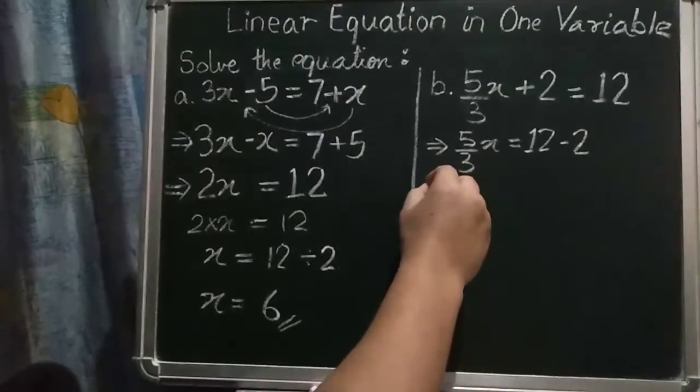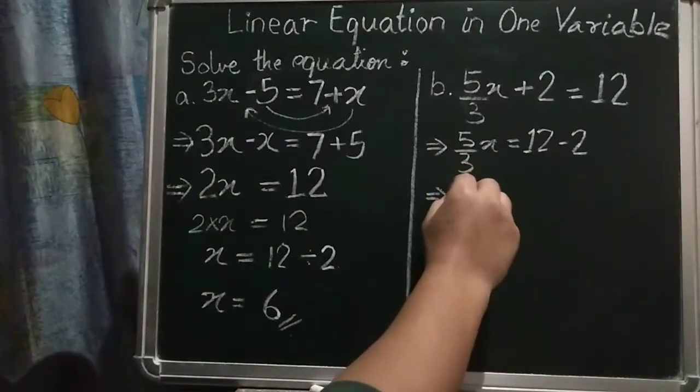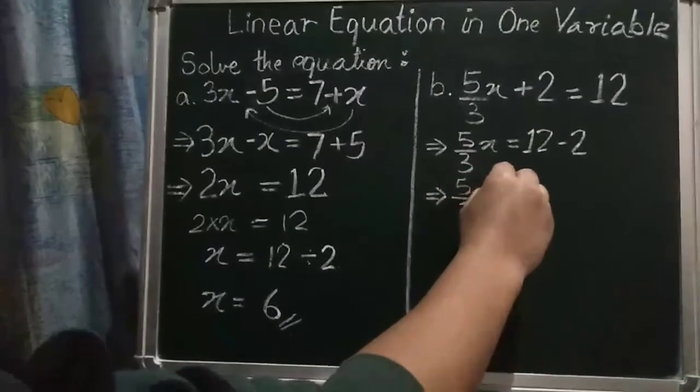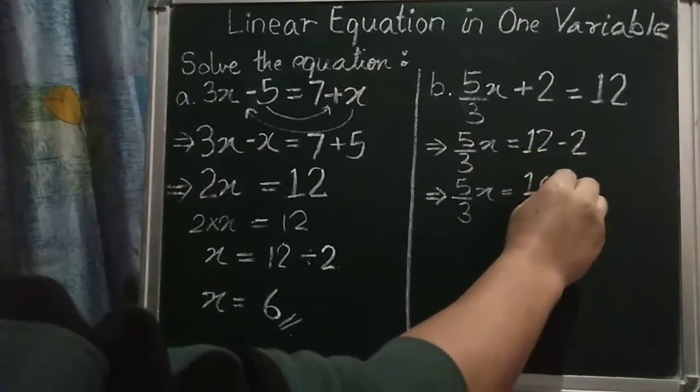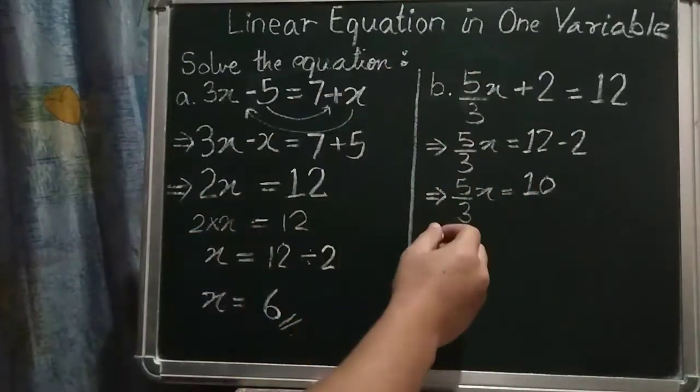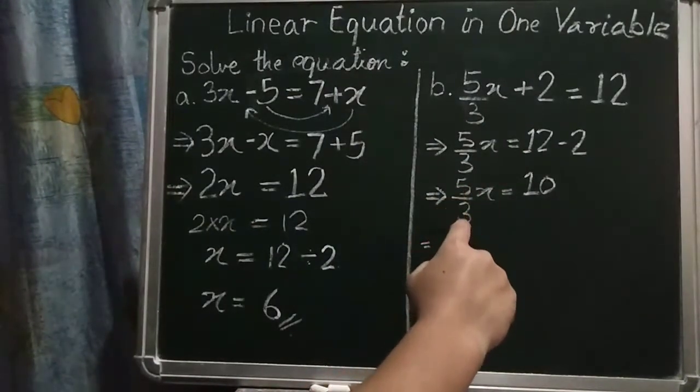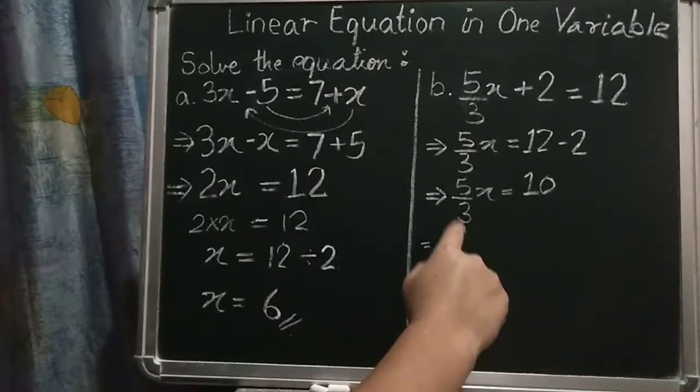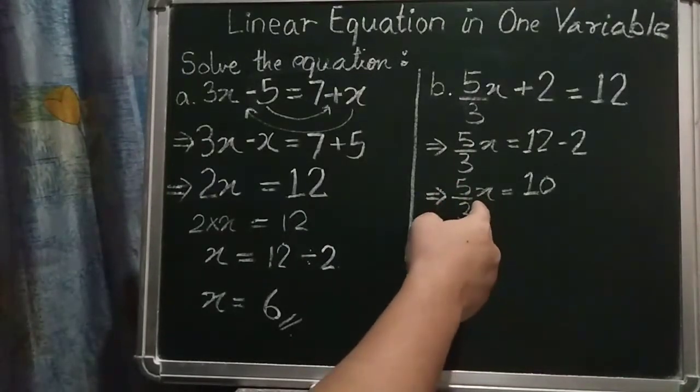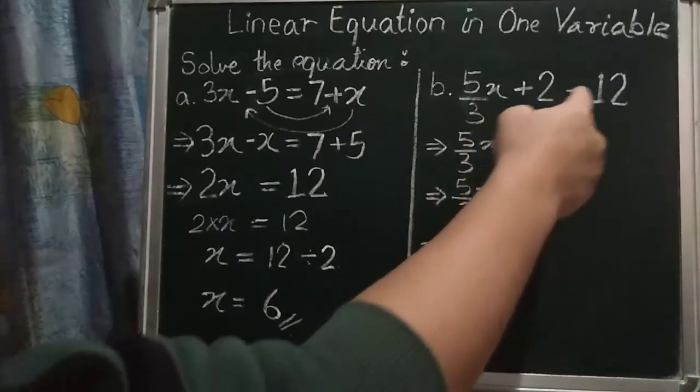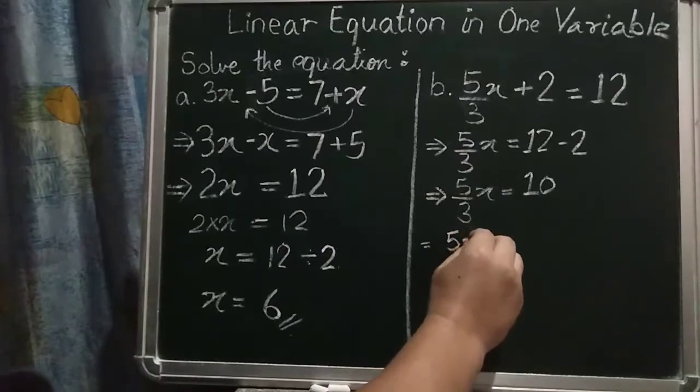So what happens? In my next line, it will become 12 minus 2 is 10. Now see over here. 5 divided by 3, this means, right? It means 5x divided by 3. So if it's divide over here, what we will, it will become here, it will become multiplied.